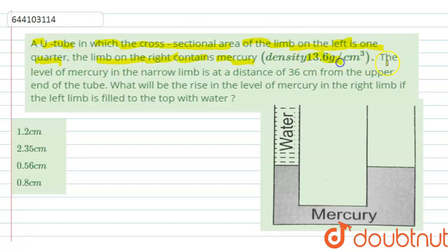The density of mercury is given. The level of mercury in the narrow limb is at a distance of 36 cm from the upper end of the tube. What will be the rise in the level of mercury in the right limb if the left limb is filled to the top with water?